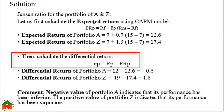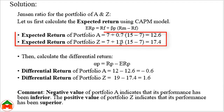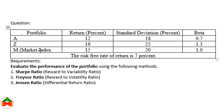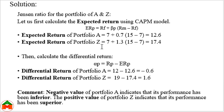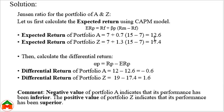For the Jensen ratio (differential return), we first calculate the expected return using the CAPM model: Rf plus beta p multiplied by (Rm minus Rf). The expected return of Portfolio A = 7 + 0.7 × (15 − 7) = 12.6%. The expected return of Portfolio Z = 7 + 1.3 × (15 − 7) = 17.4%. After calculating the expected returns, we apply the differential return formula: alpha p = Rp minus ERP.